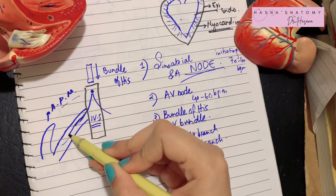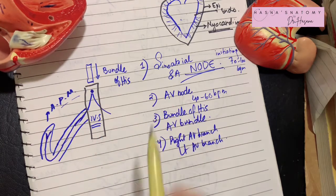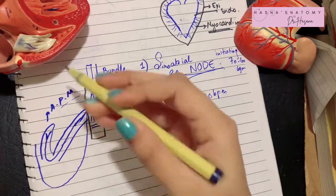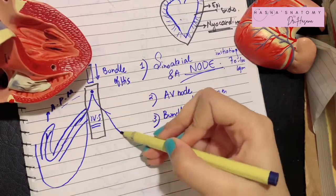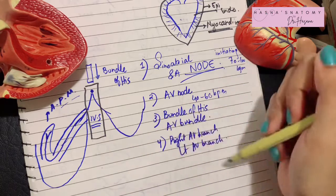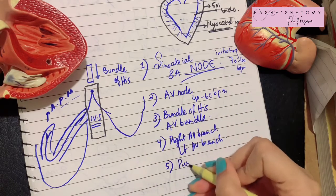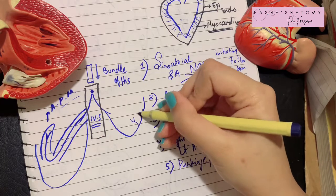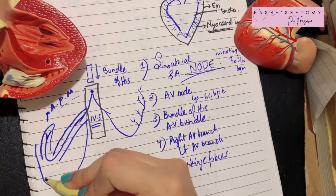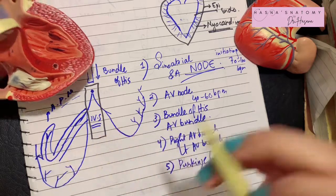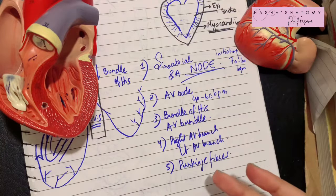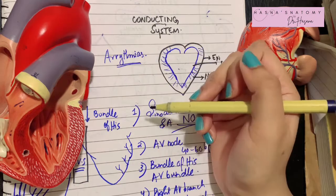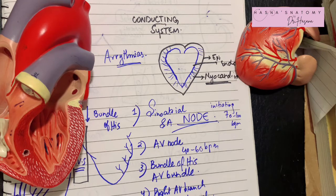The moderator band carries the right AV bundle branch and supplies fibers so the valve can also contract. Other branches go to the right ventricular wall, and the left bundle branch goes to the left ventricular wall. These bundle branches ultimately become the Purkinje fibers, which cause contraction of the ventricles. Any abnormality in the conducting system of the heart can lead to arrhythmias.